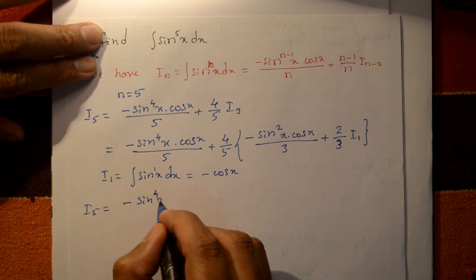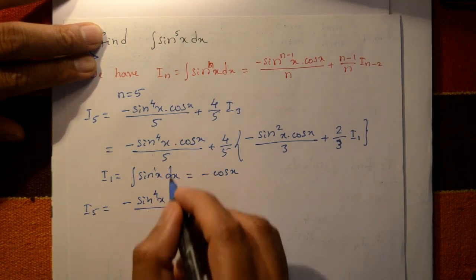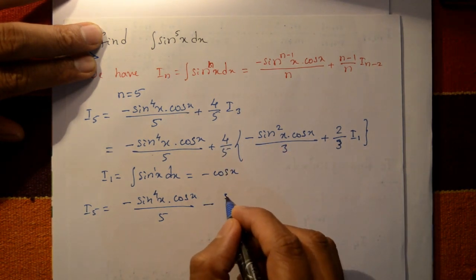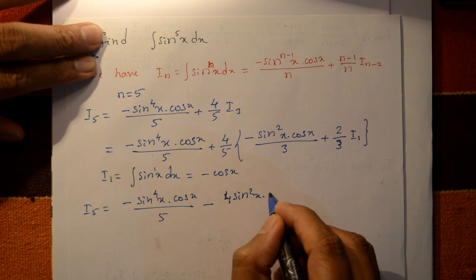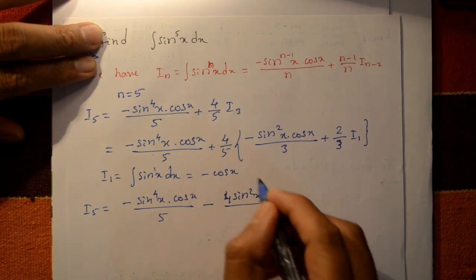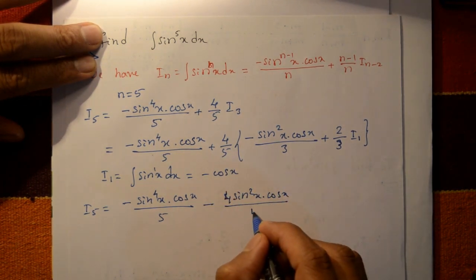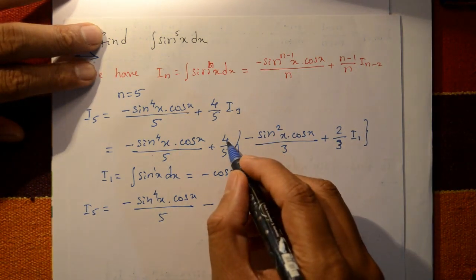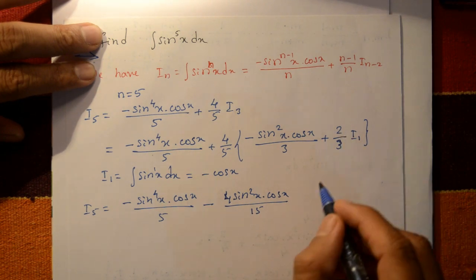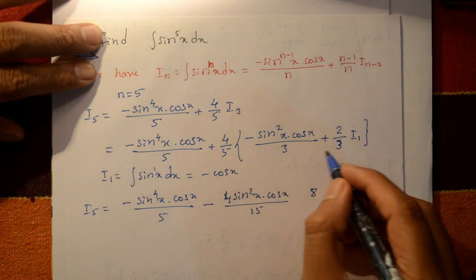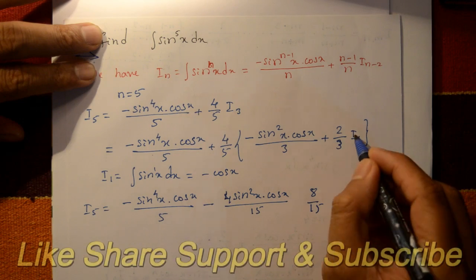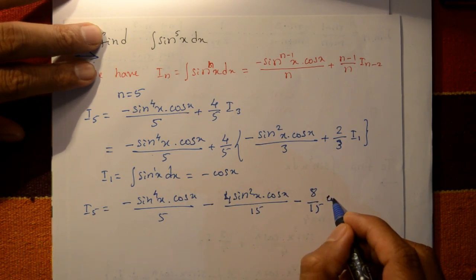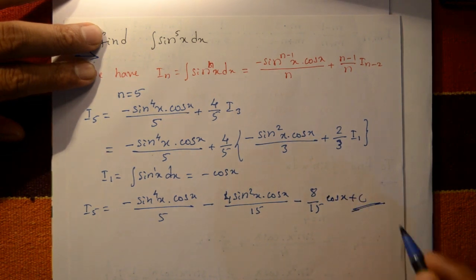So I₅ equals minus sin raised to 4 x into cos x divided by 5, plus 4 by 5 into the bracket: minus sin squared x into cos x divided by 3, plus 2 by 3 into minus cos x, plus c. Simplifying, we get the required solution with denominators 15 and terms involving 8 by 15.